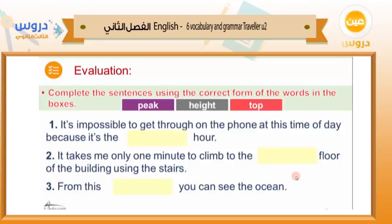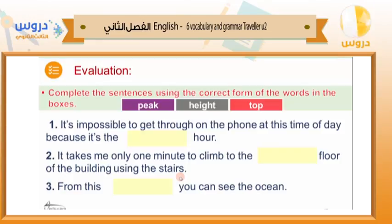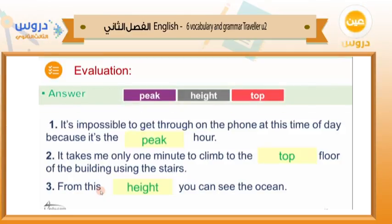Now let's complete the sentences using peak, height, or top. One: 'It is impossible to get through on the phone at this time of day because it's the ___ hour.' It's peak hour — this is why calling someone at peak hour is really a big trouble. Two: 'It takes me only one minute to climb to the ___ floor of a building using the stairs.' Answer: top floor. Three: 'From this ___ you can see the ocean.' Answer: height.